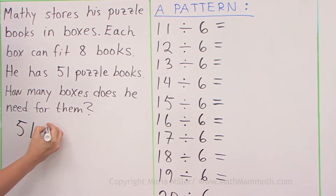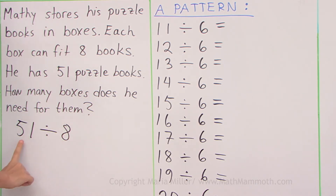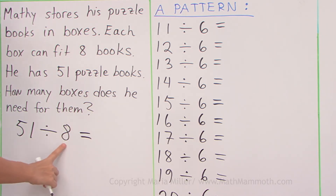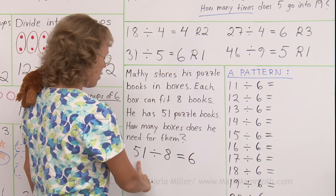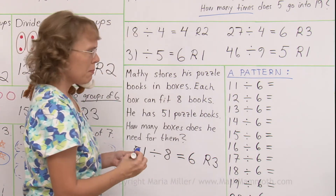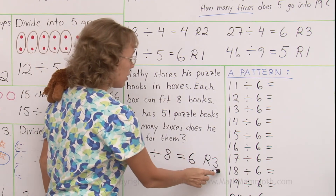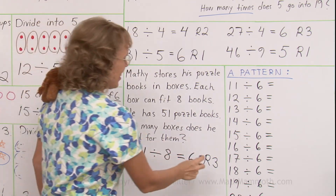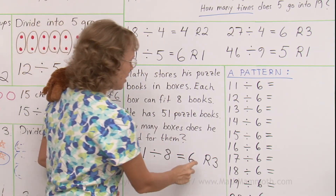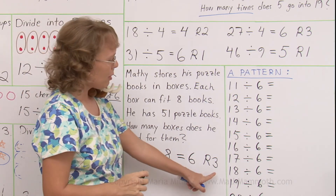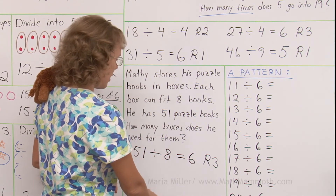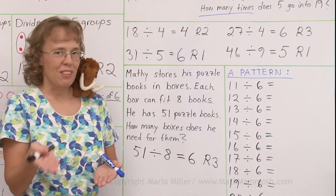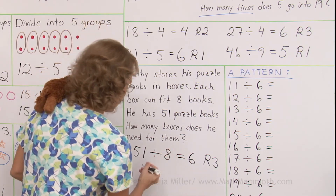The division is 51 divided by 8 — how many times does 8 go into 51? 6 times, yes. 6 times 8 is 48, so there's a remainder of 3. Now, what does that mean? How many boxes does he need — 6 boxes? But what about those leftover books? He actually needs 7 boxes. 6 boxes will be full — 6 times 8 is 48 — and the remaining 3 books go into a 7th box. That's not a full box, but he does need 7 boxes.